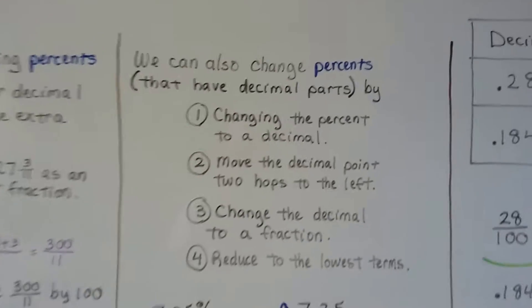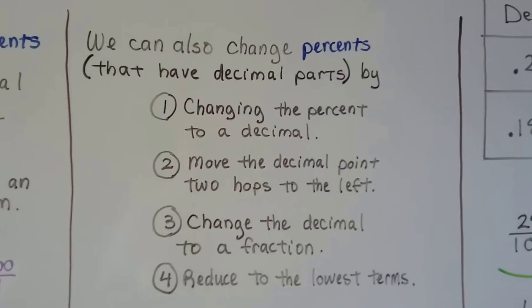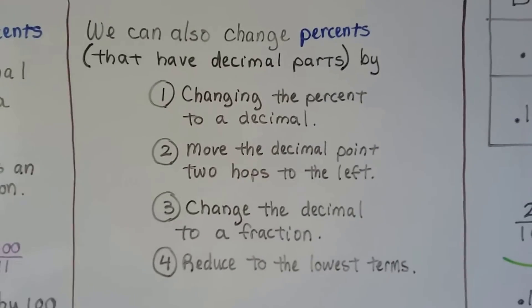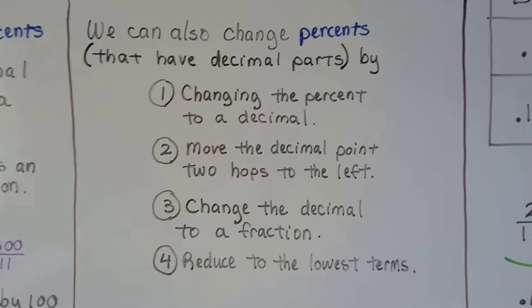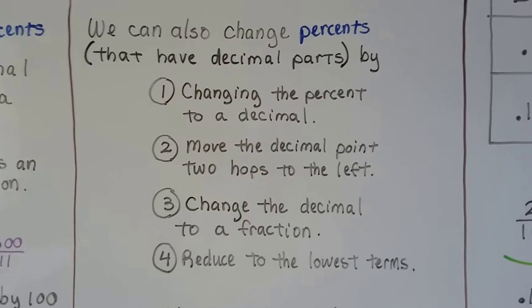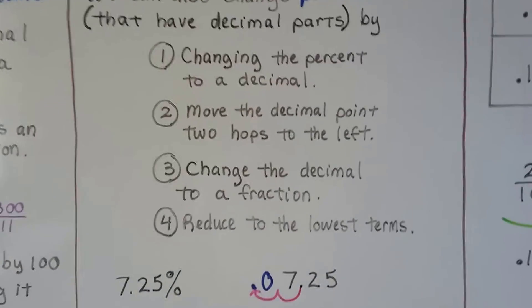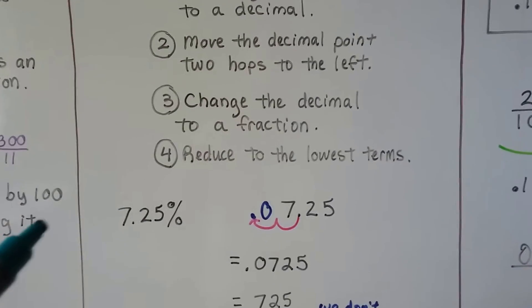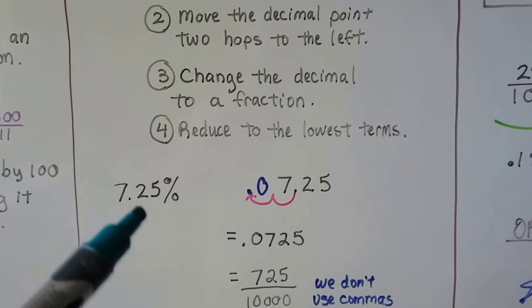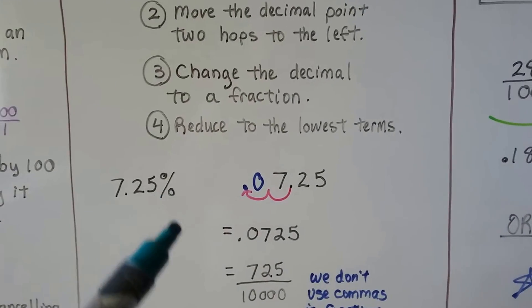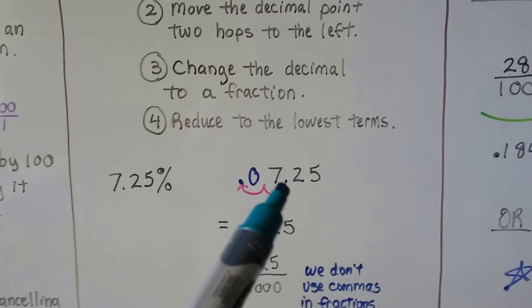We can also change percents that have decimal parts by changing the percent to a decimal. Then you move the decimal point two hops to the left. Then you change the decimal to a fraction, and then you reduce it to the lowest terms. So we have 7.25 percent. We take away that percent sign.